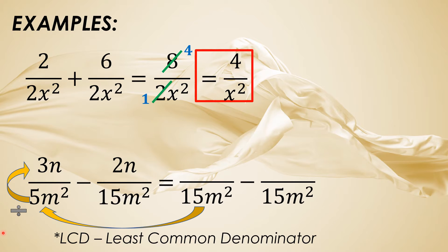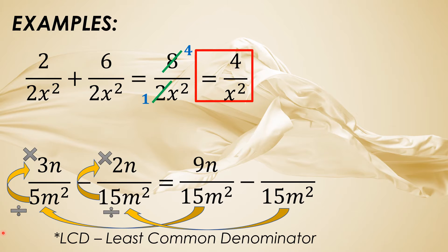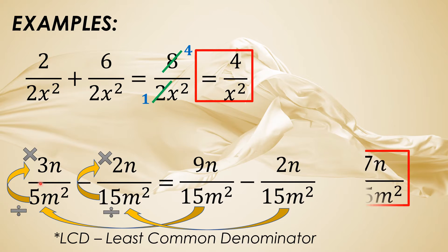Then let us multiply 3 by 3n. So 3 times 3n is 9n. Next, 15n squared divided by 15n squared is 1, times 2n — the answer is 2n. So magkatulad na sila ng denominator, which is 15n squared. Let us now subtract 9n minus 2n. So the final answer is 7n over 15n squared, because we cannot simplify or get the lowest term of 7 and 15.